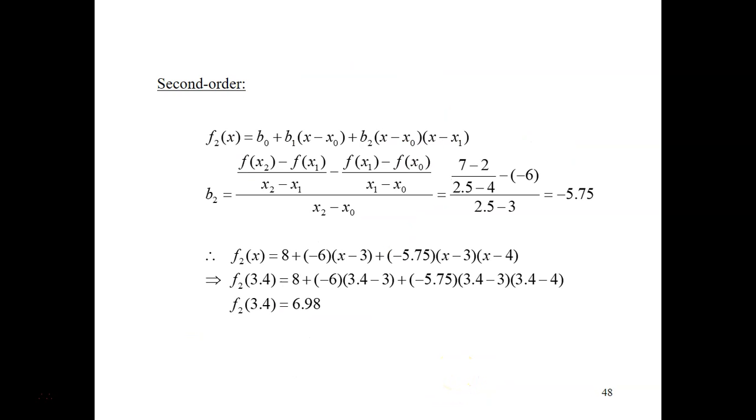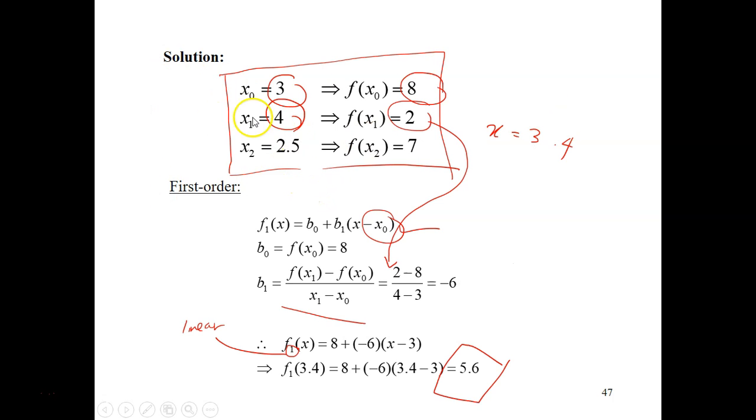Let's look at the second order. This is the formula for the interpolating second order polynomial: B0 plus B1 plus B2 and so on. We have calculated B0, we have calculated B1, and it's now time to calculate B2. Using the formula for B2, we will substitute all the values inside.